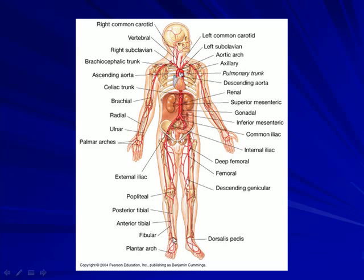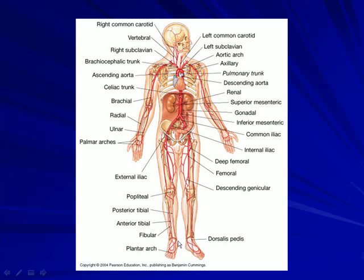Two key points in the lower extremity: the dorsalis pedis, which is where you palpate pedal pulses. Compressing this artery against the metatarsal bones allows you to feel an arterial pulsation. The other location is the posterior tibial artery, palpated in the posterior aspect of the ankle joint. You need to know both the dorsalis pedis and the posterior tibial.